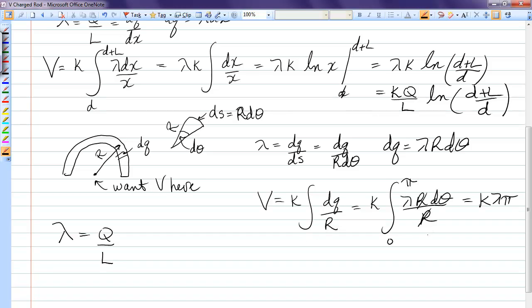For the second one, it would have to be lambda would be q over that arc length, which is half of a circle, so it would be pi times r. And so for the voltage due to the curved rod, I would have to write k pi times q over pi r. Pi's cancel, and I get k q over r.